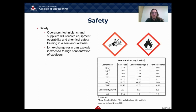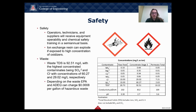For safety, operators, technicians, and suppliers will receive equipment operability and chemical safety training on a semi-annual basis. The ion exchange resin is the most dangerous part of our process — it can explode or catch fire if exposed to high concentrations of oxidizers. For our waste, the waste stream TDS is 92.51 milligrams per liter, with the highest concentrated contaminants being sulfate and chlorine ions. Depending on the waste, the EPA and ADEQ can charge $0.0008 per gallon of hazardous waste.